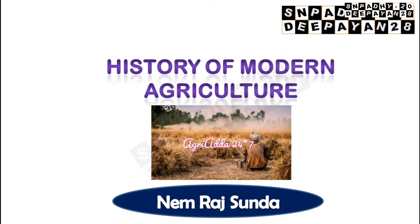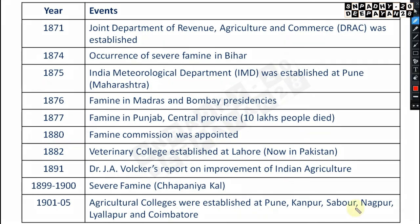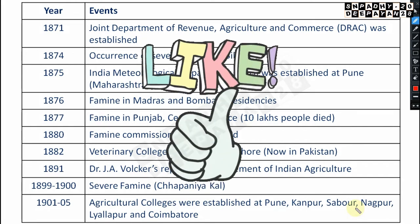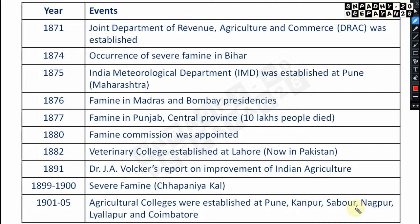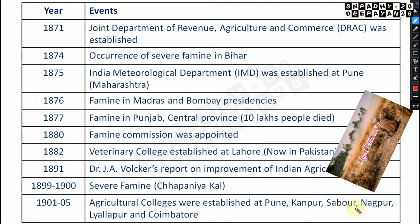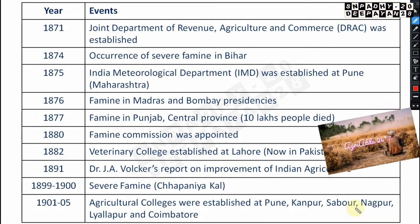Today we are going to discuss the history of modern agriculture. There are important points which may come in your exam, like objectives — when famines came, which institution was established in which year, when ICAR came, when IARI came, when it became Imperial to India, the Gurgaon project, and so many schemes from the department of agriculture. These are very important, so we will discuss them one by one.